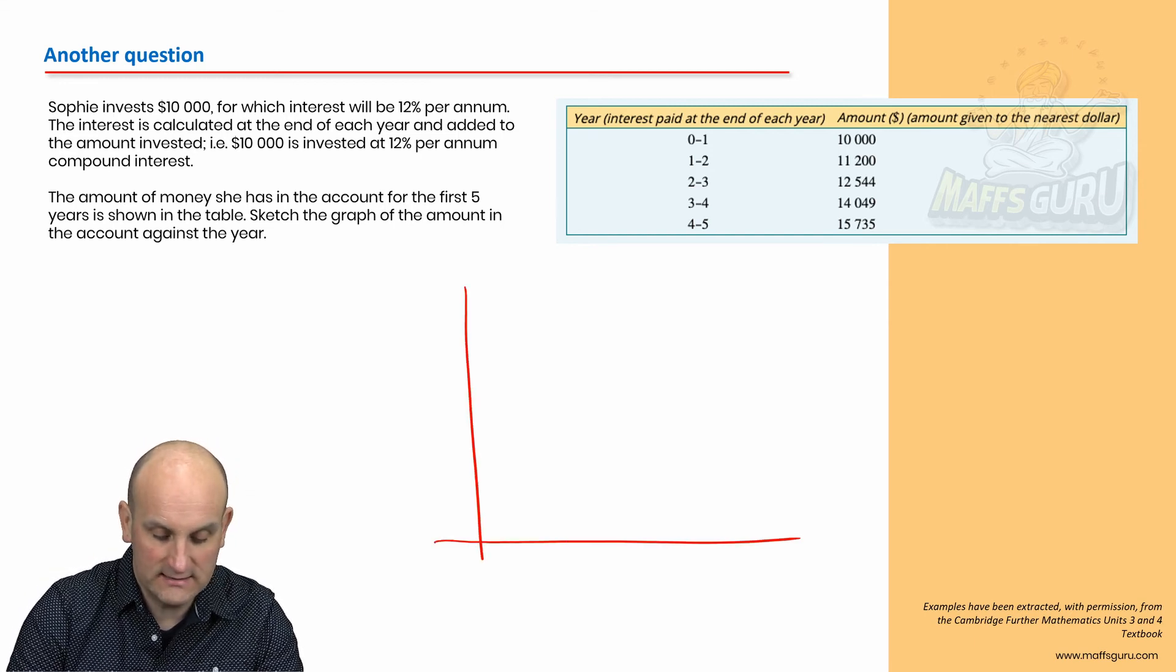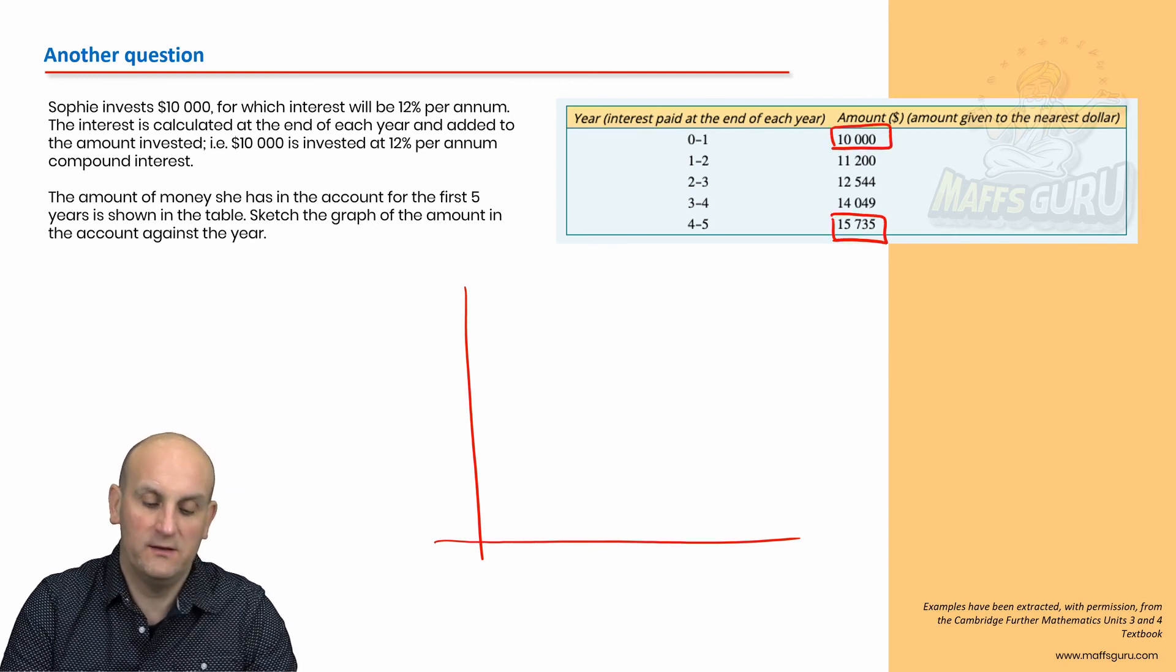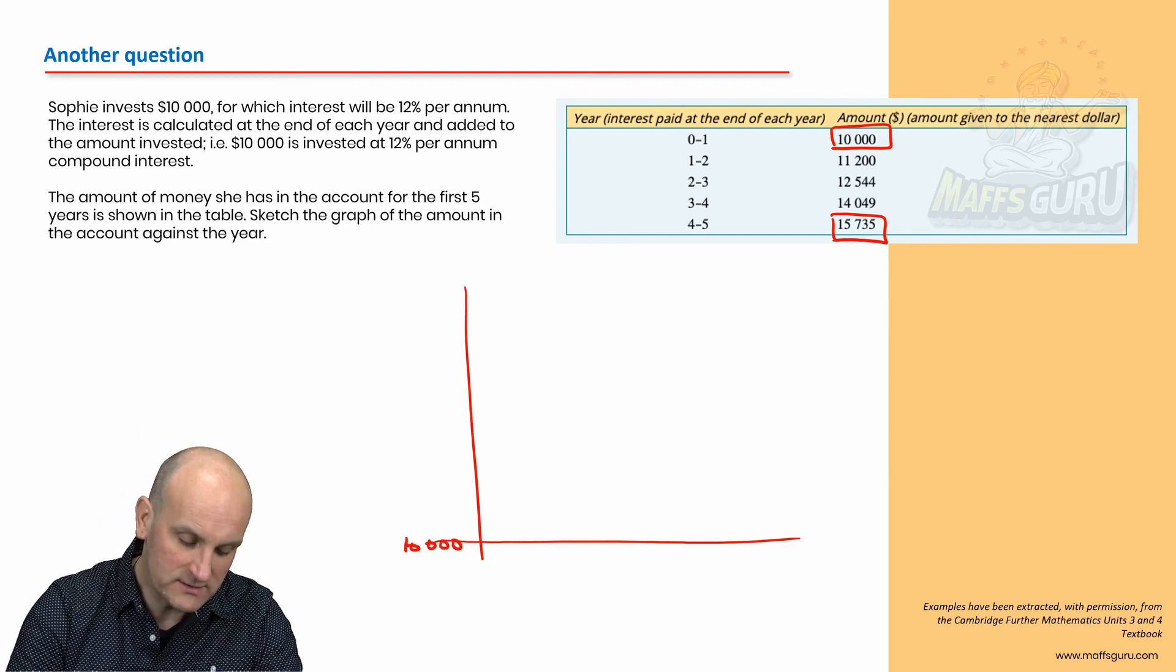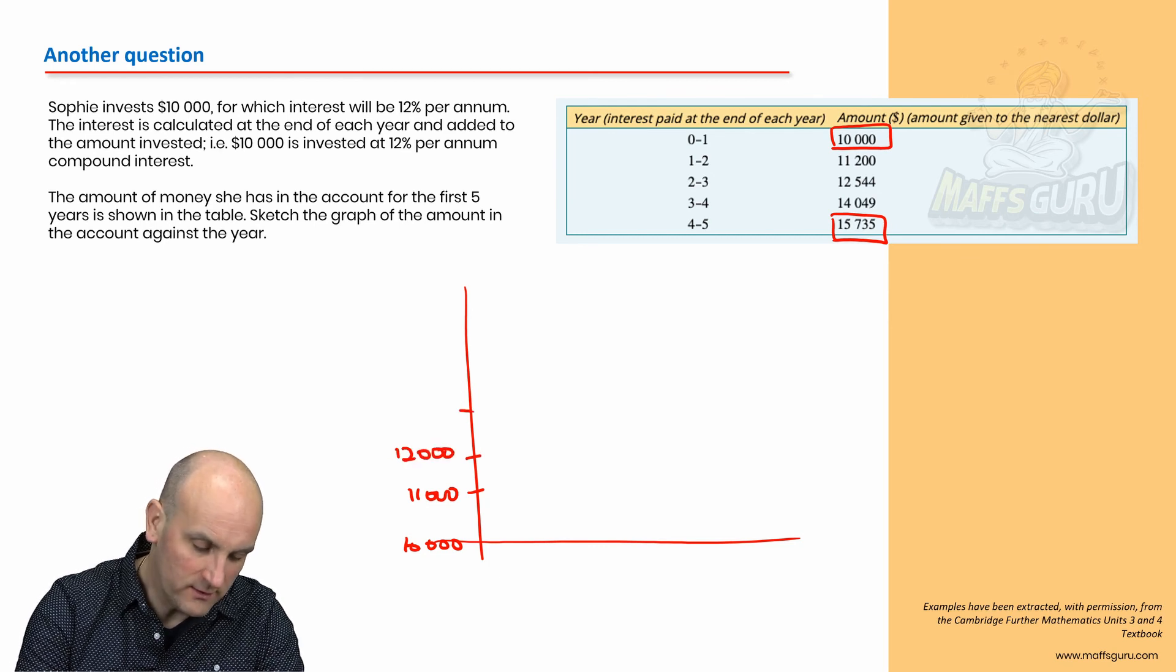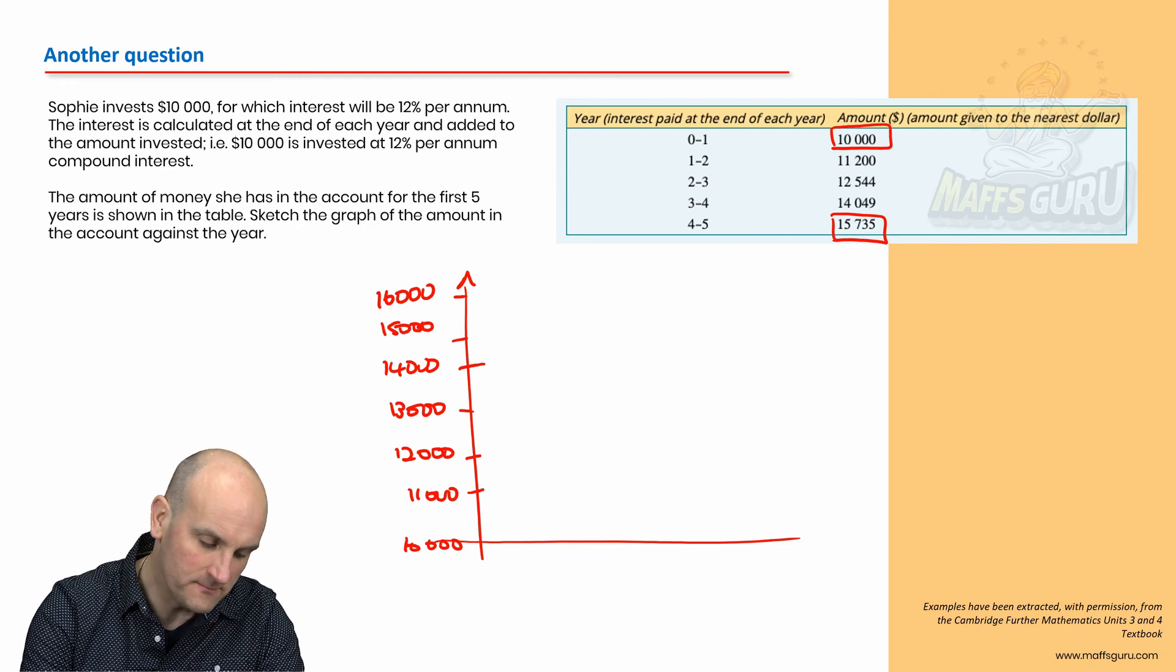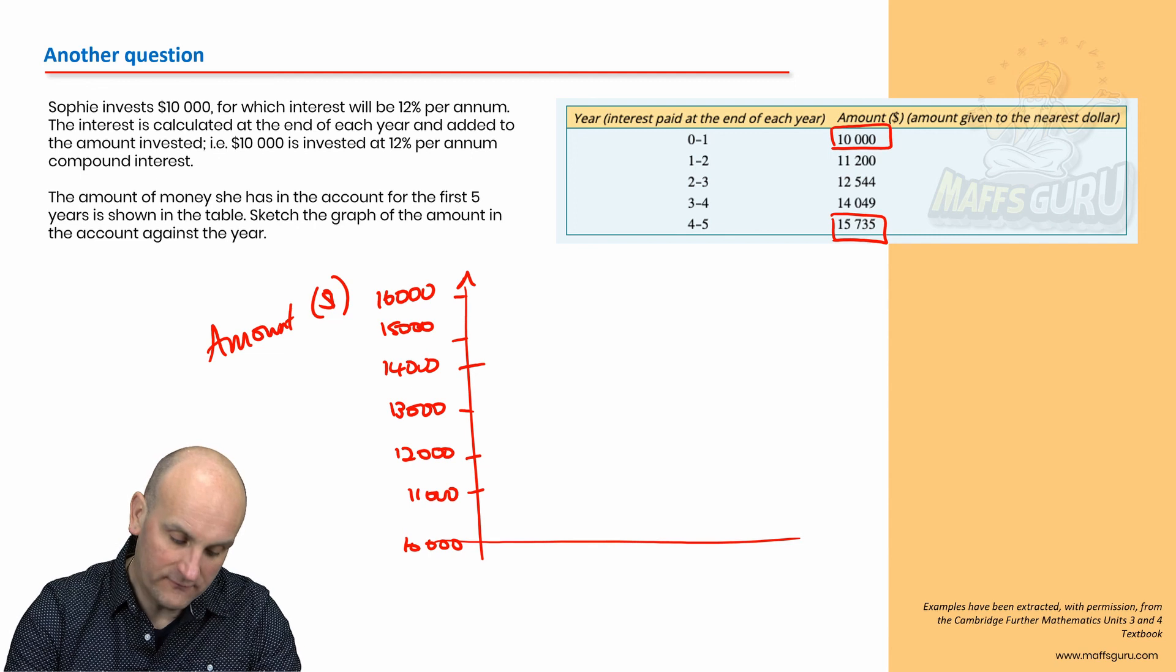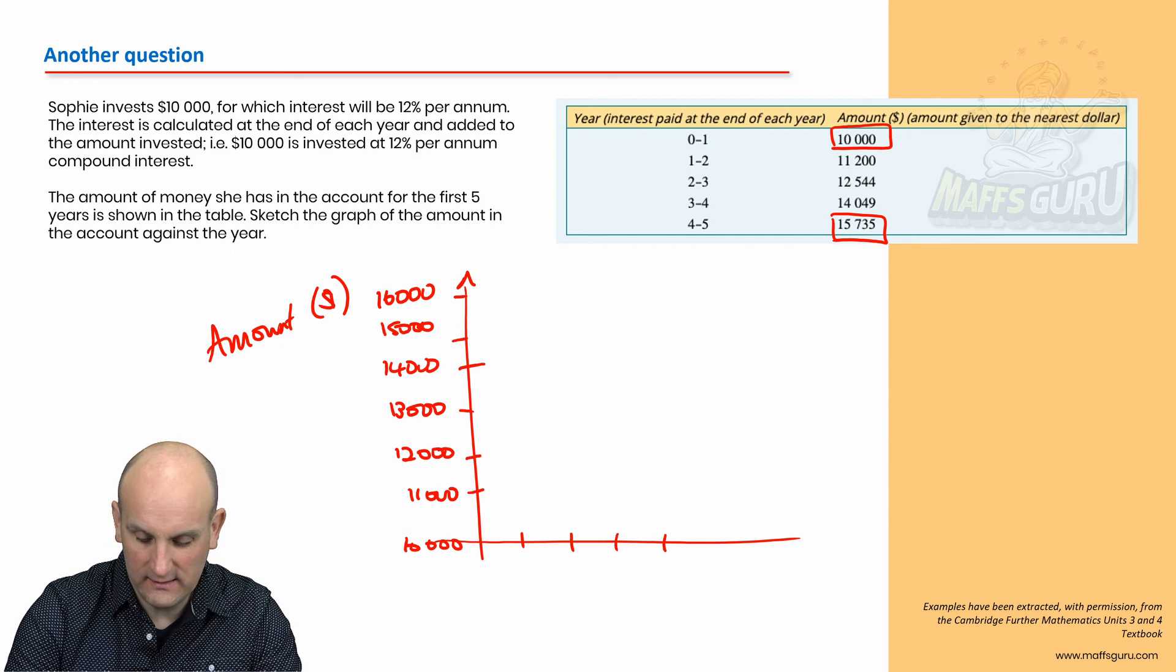So again, amount against the year. So in this situation, because my start amount is $10,000 and my end amount is $15,735, I'm going to start here at $10,000 and then $11,000, $12,000, $13,000, $14,000, $15,000, and $16,000. So that's now, what do we say? Amount. Don't forget to label the axes in dollars. And then what do we have on the bottom? Year. So one, two, three, four, and five years.